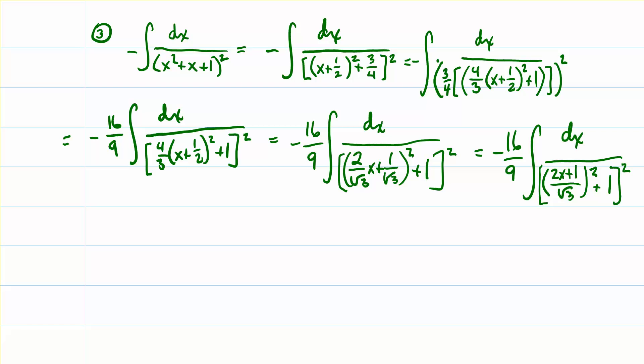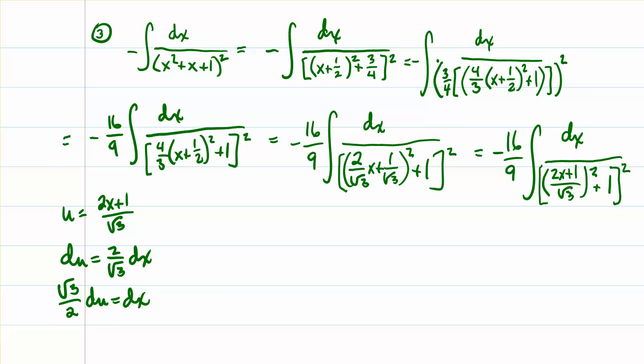As mentioned before, we're going to let u equal (2x + 1) over the square root of 3, or (2 over square root of 3) times x. We get that du is equal to (2 over square root of 3) dx, or that dx is equal to (square root of 3 over 2) du. Now we're going to substitute that back into the original, and bring the square root of 3 over 2 outside the integral.